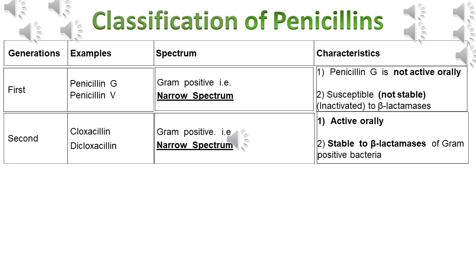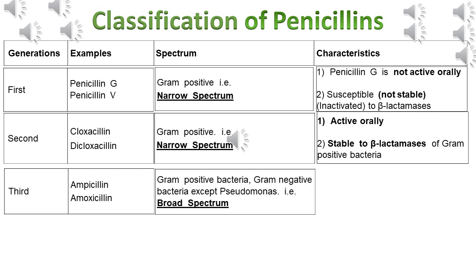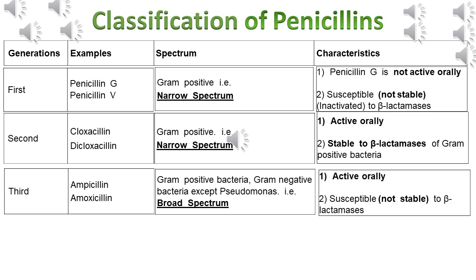To overcome these disadvantages came the third generation of penicillins. Examples are Ampicillin and Amoxicillin. Spectrum of activity is broad spectrum — kills gram-positive bacteria, gram-negative bacteria, except Pseudomonas. Characteristics: active orally and not stable to beta-lactamases. The two advantages are broad spectrum of activity and active orally. The two disadvantages are: does not kill Pseudomonas, so can be used only in day-to-day infections, and not stable to beta-lactamases, so cannot be used for resistant infections.